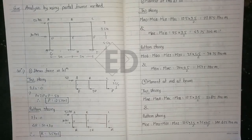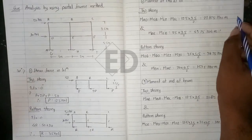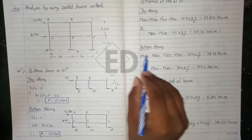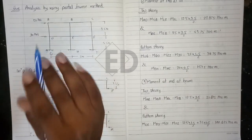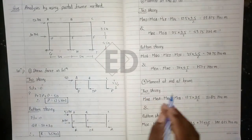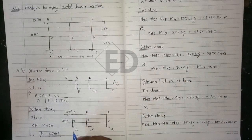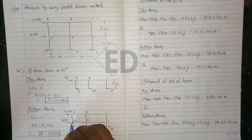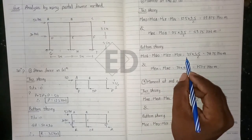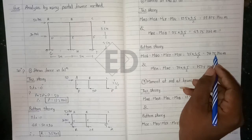Now for the calculation for the bottom story, the calculation is also the same as what we did for the top story. From D to H is the same as from H to G, and also the moment of this span is the same. So we directly calculate R × h/2 and we get 78.75 kNm.